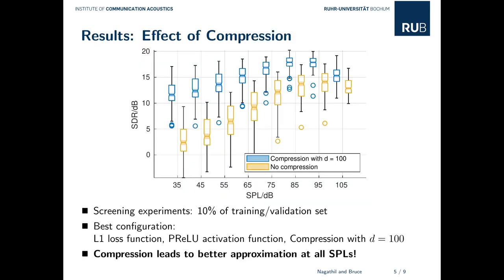Here we see the approximation accuracy for the inner hair cell representation in terms of the SDR measure as a function of the input sound pressure level. From all considered combinations of loss and activation functions, the L1 loss in conjunction with a PReLU activation function and a compression factor of 100 turned out to perform best in terms of SDR. Throughout all sound pressure levels, this setting leads to a better approximation than for the uncompressed case.